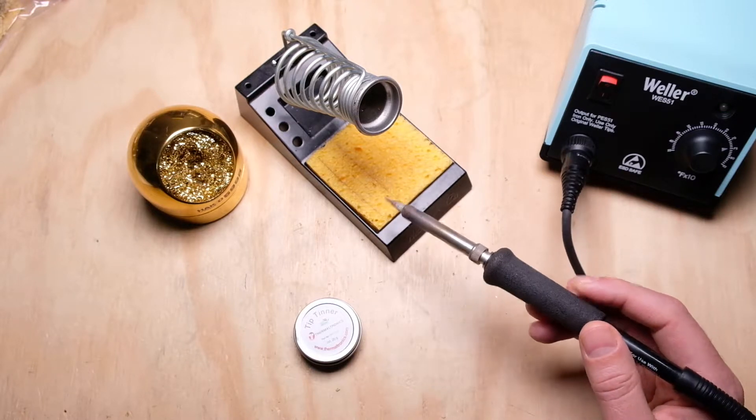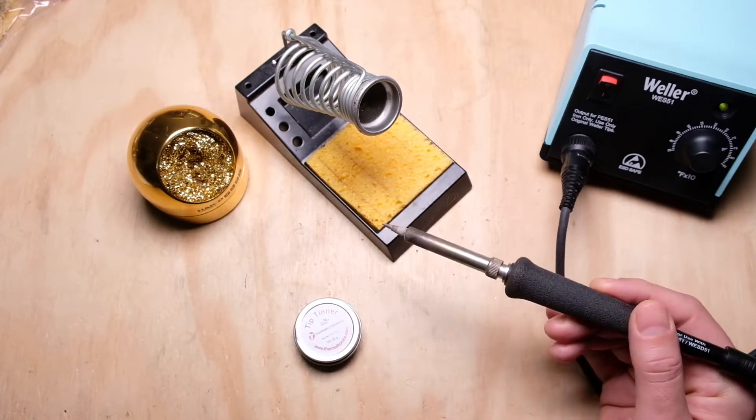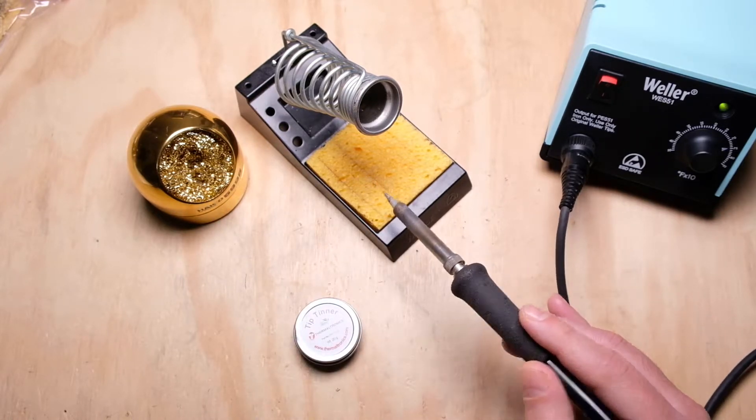Now, if your tip has gotten incredibly dirty and you need to clean it off and neither one of these is going to be effective enough to get any kind of baked on residue off, there's a couple of things you can do.